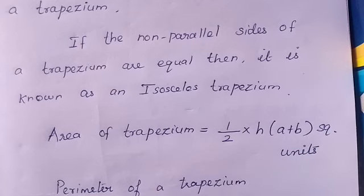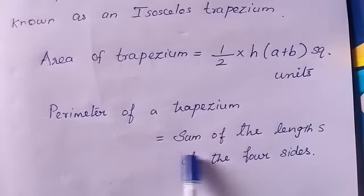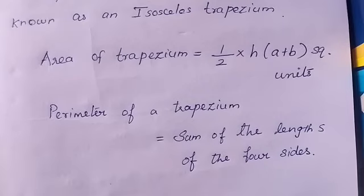To find the perimeter of a trapezium, it equals the sum of the lengths of all four sides.